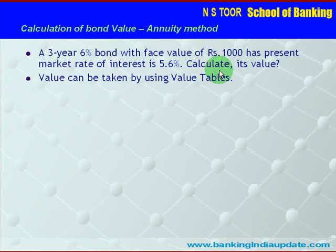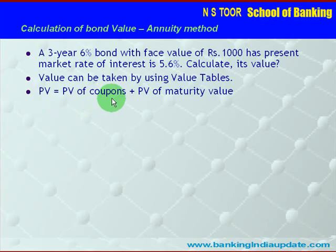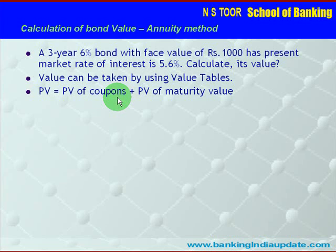The value will be calculated using the annuity method, and for that purpose we will be requiring the annuity tables as well as the discounting factor tables. The present value of the bond will be equal to the present value of the annual coupons — calculated using the annuity method — plus the present value of the maturity value of the bond, calculated using the discounting method.